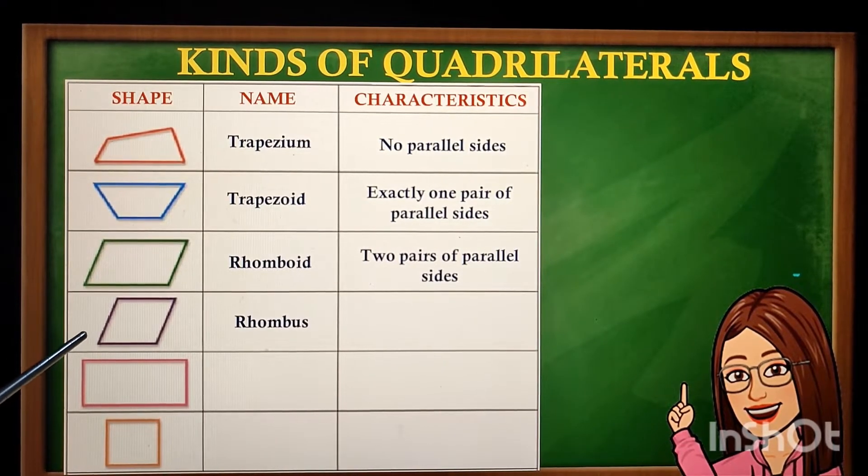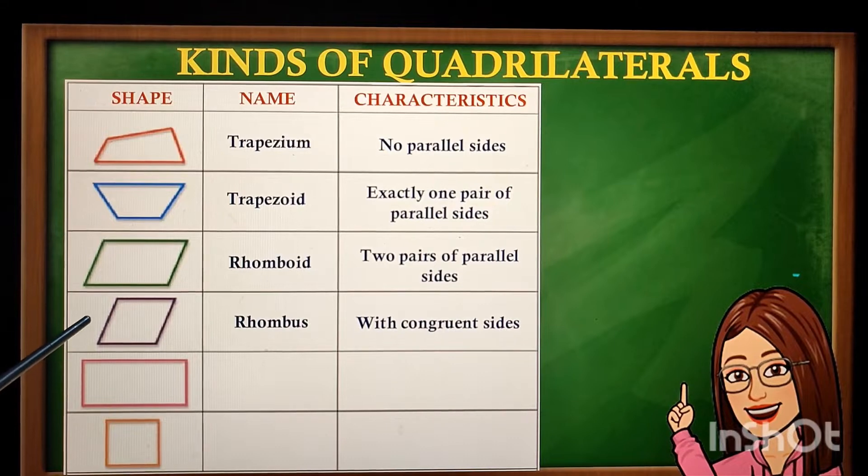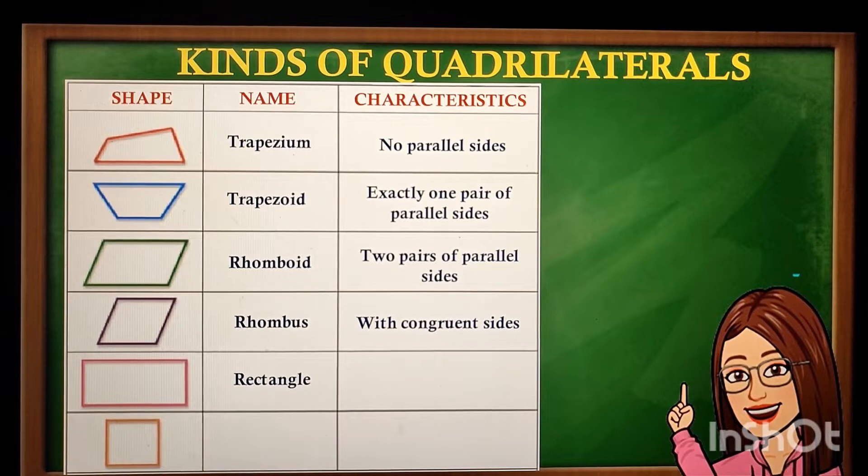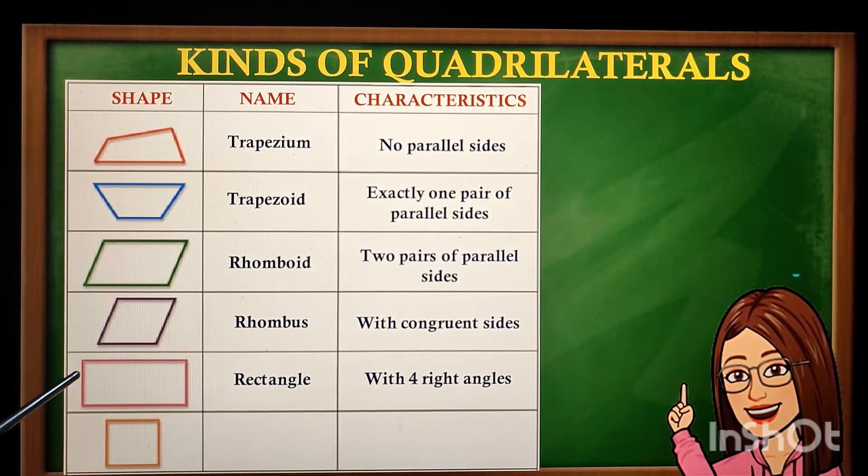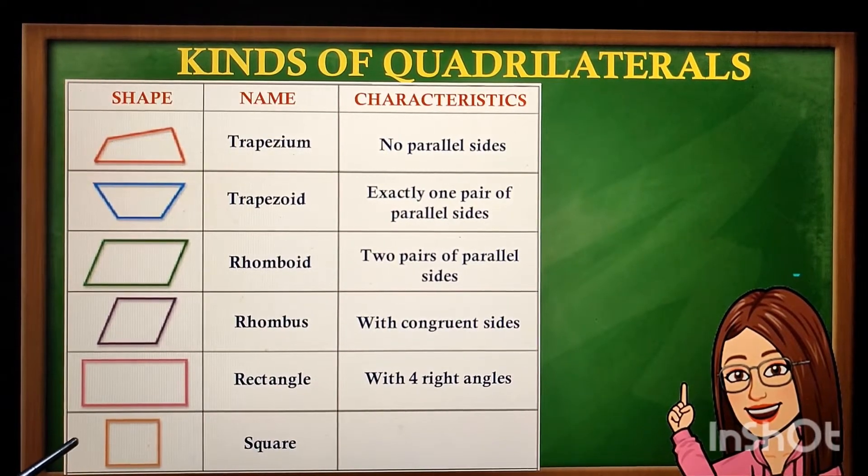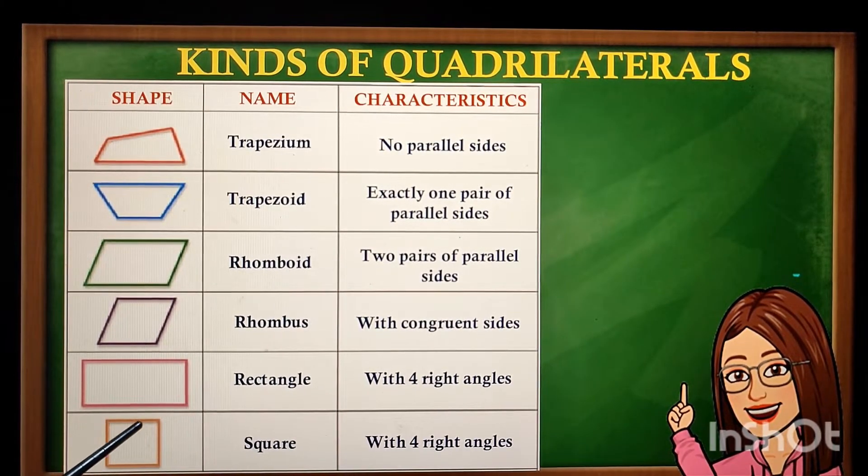Next we have rhombus with congruent sides. Then we have rectangle with four right angles, forming 90 degrees. Then the last one is square with four right angles forming 90 degrees.